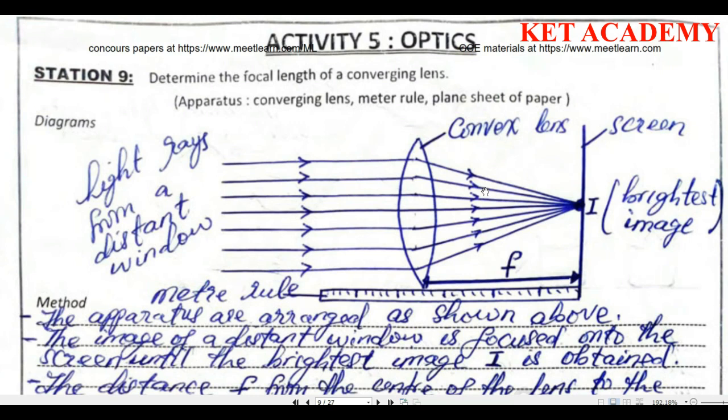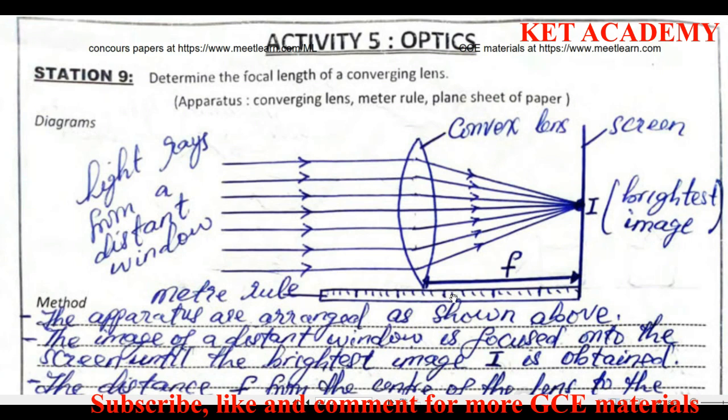If you meet this experiment, the first thing you need is a metal ruler and your screen, which in this case will be a plain sheet or A4 paper, and your light source will generally be a window. On a day when the weather is bad and there's no light from the window, it's always advisable to go to the practical section with your torch or light source. Some schools will provide it, but it's always advisable to bring your own.